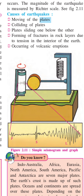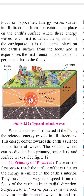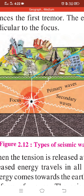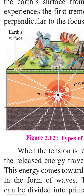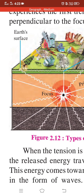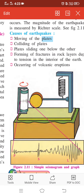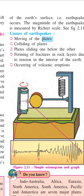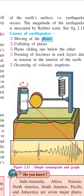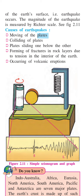There are some causes of earthquakes that we have to study in detail. Here is a picture showing tension being created and energy being released from the focus to the earth's surface. The causes include: the moving of plates, colliding plates, one plate sliding below another, forming fractures on rock layers due to tension in the interior of the earth, or the occurrence of a volcanic eruption. All these factors may be a reason for an earthquake.